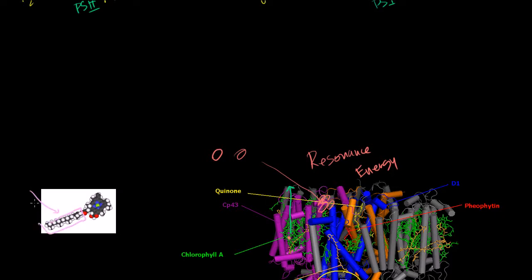A chlorophyll A molecule has a hydrocarbon tail — you see that right here. And it has a porphyrin ring, or porphyrin head, I guess you could call it. This little group right here is called a porphyrin head. And right in the center of it, you have a magnesium — that green right there is a magnesium ion.